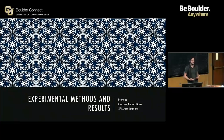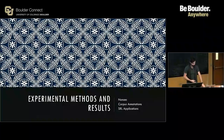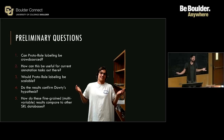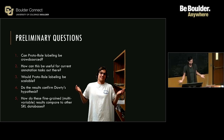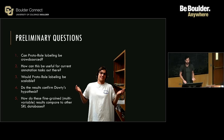Moving on to what Reisinger et al. actually did — we're going to talk about the experimental methods, the results, and some of the applications. For some preliminary questions: can proto-role labeling be crowdsourced? How can this be useful for current annotation tasks? Would proto-role labeling be scalable? Do the results confirm Dowty's hypothesis? And how do these fine-grained multivariable results compare to other SRL databases — and can they be combined? Which is one of the central questions of the paper.